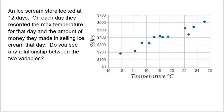All right. So let's actually get to an example here. So here's an example of a scatter plot, right? You see a bunch of points and let's read what this problem is all about. An ice cream store looked at 12 days. On each day, they record the max temperature for that day and the amount of money they made in selling ice cream that day. Do you see any kind of relationship? So what we looked at here was the X value on this chart would be the temperature, right? That would be the X on that day. And the Y value would be the sales of ice cream for that day.